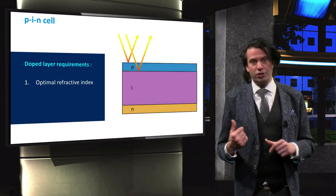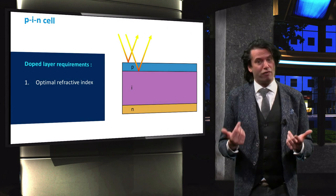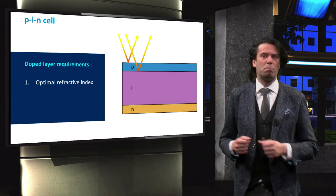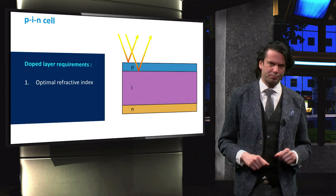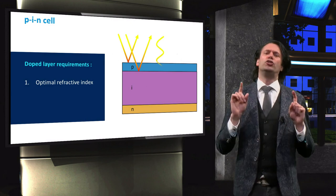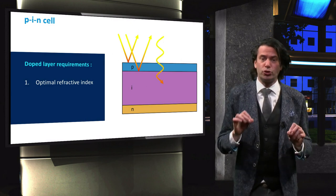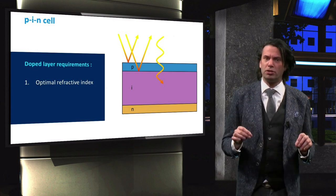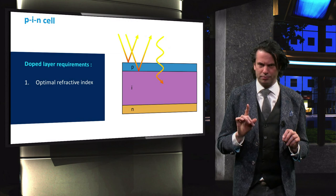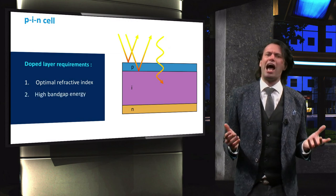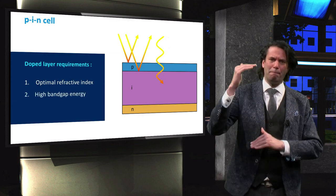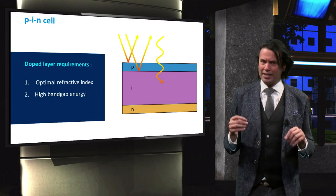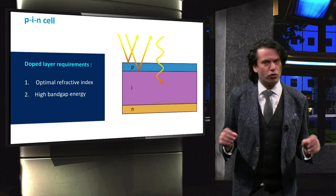The n-doped layer, on the other hand, should reflect as large a fraction as possible back into the absorber layer. Secondly, the doped layer should be transparent to incident light, to minimize the parasitic absorption by the doped layer. This could be achieved by having a doped layer with a high bandgap energy, so that it is transparent to a large fraction of the incident light.